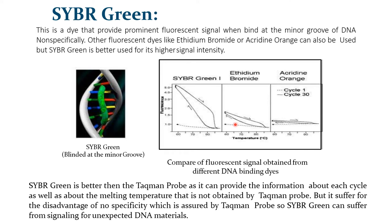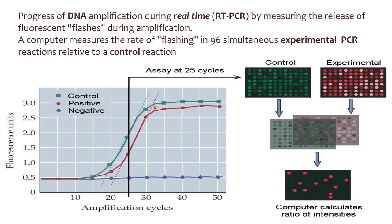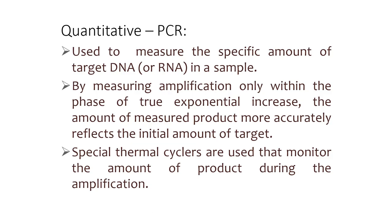However, SYBR Green suffers from the disadvantage of no specificity, which is assured by the TaqMan probe — meaning SYBR Green can produce signals from unexpected DNA materials. The progress of DNA amplification during real-time PCR is monitored by measuring the release of fluorescent signal during amplification. The computer measures the rate of flashing in 96 simultaneous experimental PCR reactions relative to the controlled reaction.